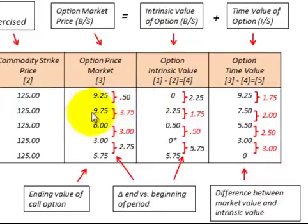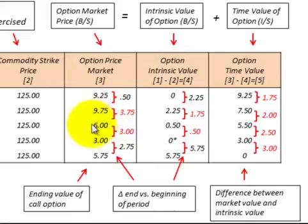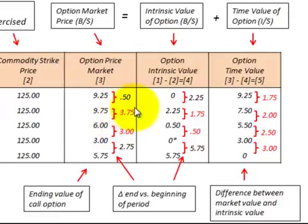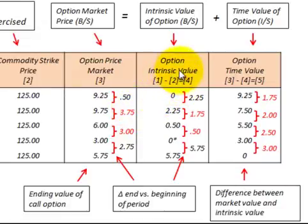Looking at the next period, we went from $9.75 at the beginning to $6.00 at the end, giving us a change of negative $3.75 — a reduction indicated in red. We also have to determine the change in the intrinsic value of the option and the time value of the option for each of those periods.